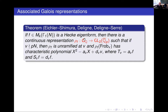To modular forms you can associate Galois representations by a theorem of Eichler–Shimura, Deligne, and Deligne–Serre. If you have a Hecke eigenform—an eigenform for all the operators T_v and S_v, say for v not dividing N—then there's an associated two-dimensional p-adic Galois representation with coefficients in Q̄_p. For weight two this was constructed by Eichler–Shimura, then Deligne for higher weight, and Deligne–Serre for weight one. It has the property of being unramified at all good primes not dividing p or the level, with characteristic polynomial of Frobenius given by the Hecke polynomial in terms of the Hecke eigenvalues.